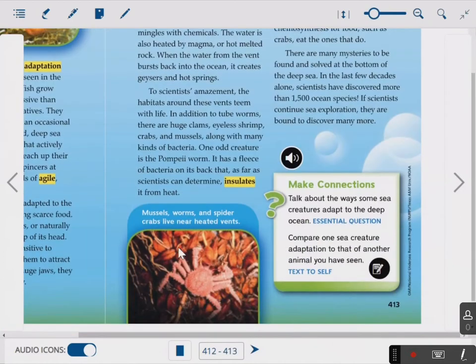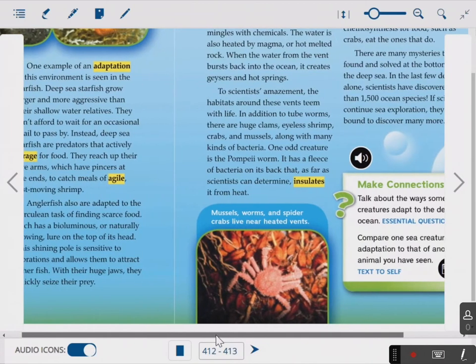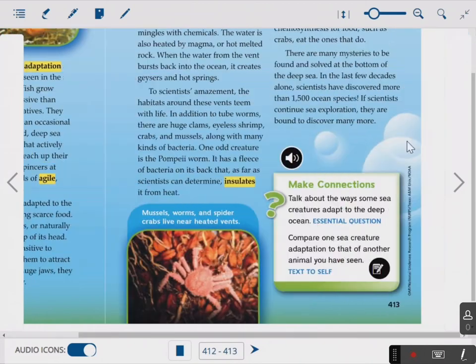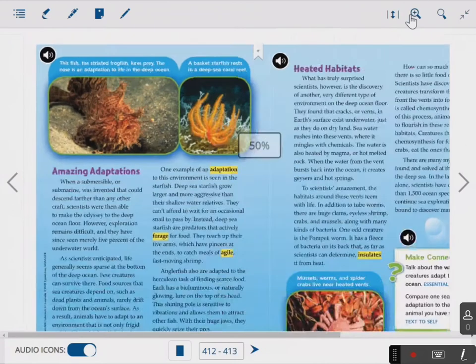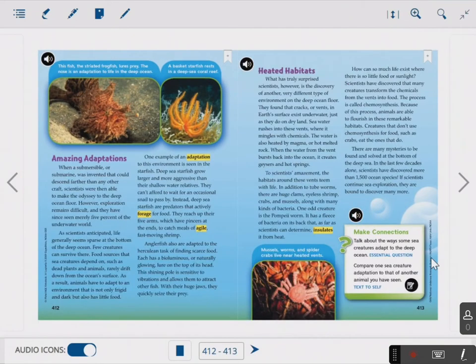Alright, so here's mussels, worms, and spider crabs that live near heated vents. It says, talk about the way some sea creatures adapt to the deep ocean. So, I would look at the Pompeii worm, look at the basket starfish. Compare one sea creature adaptation to that of another animal you have seen. It doesn't have to be an animal that we learned about today. It could be another animal that you've seen. Alright, if you need to pause so you can read this, or look at it closely, or take a screenshot, whatever you need to do, go ahead and do that now.